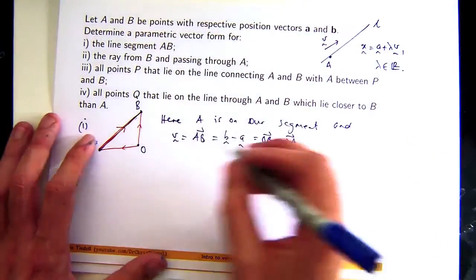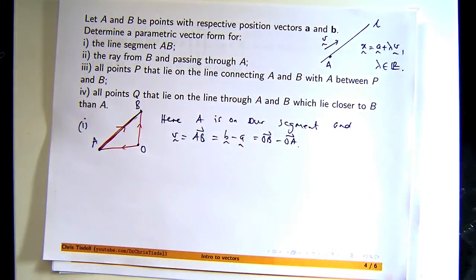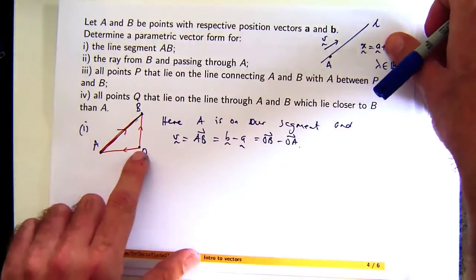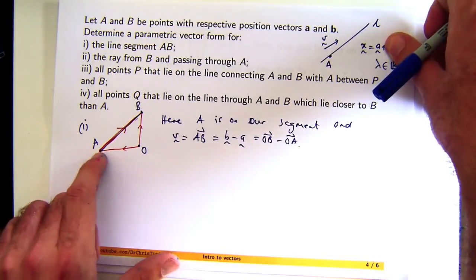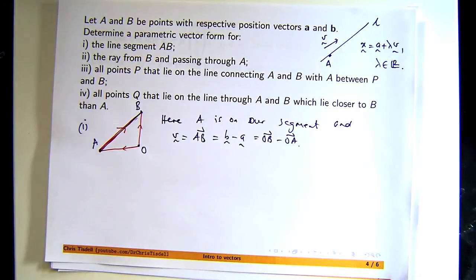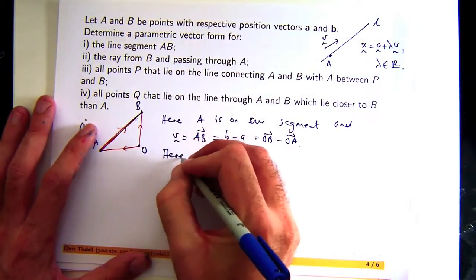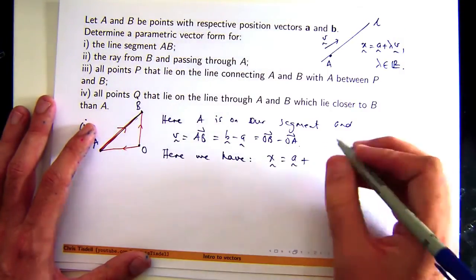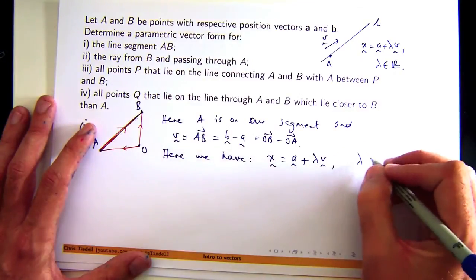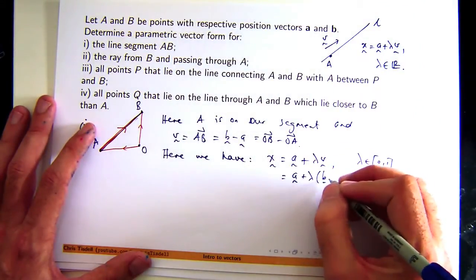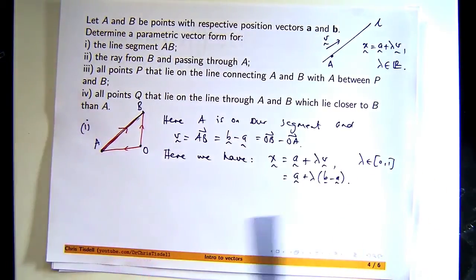Sometimes it's helpful to think about what happens at the end points of the lambda interval. So when lambda equals 0, that'll be 0, so I just get a starting point. And as lambda increases, basically lambda AB stretches, or it starts small and it gets bigger.